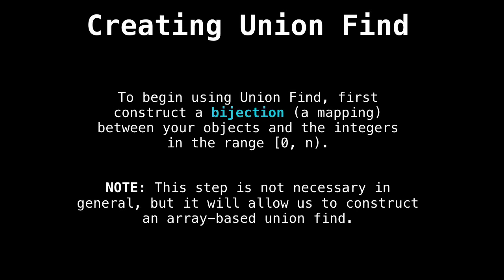To create our union find, the first thing we're going to do is construct a bijection, or simply a mapping between our objects and the integers in the range zero inclusive to n non-inclusive, assuming we have n elements.